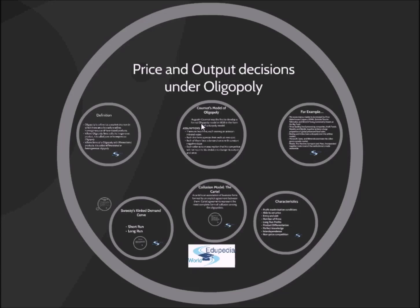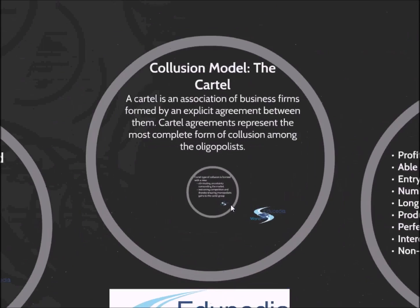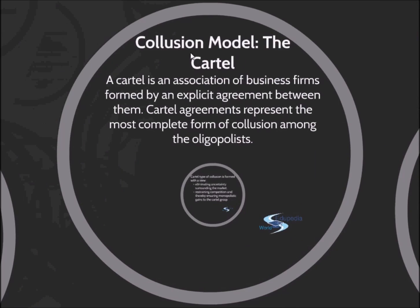Hello and welcome back to edupediaworld.com. In this session we will be continuing with oligopoly type of market structure and we will be discussing our last model of price and output determination under oligopoly, that is the collusion model — the cartel. We have already discussed what collusion is. Now we will be focusing on how price and output is determined under this type of model.